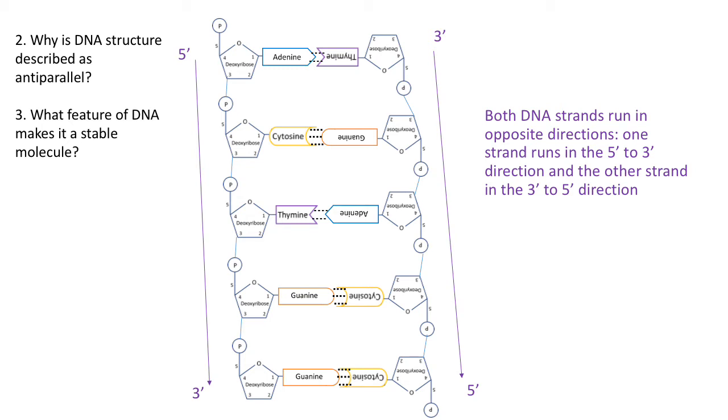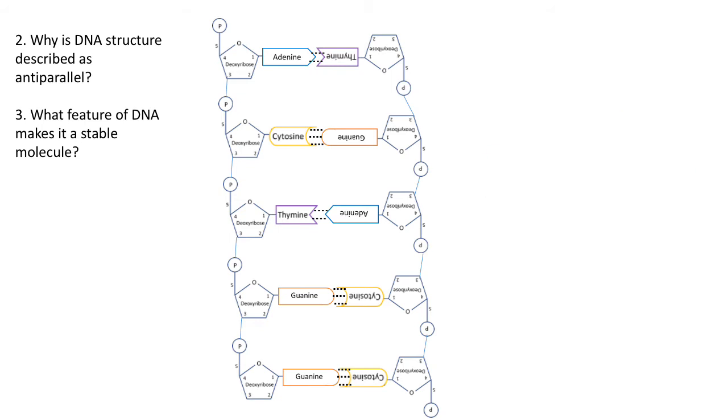Let's have a look at question three: what feature of DNA makes it a stable molecule? What you should be able to label is this phosphodiester bond. That's one example,